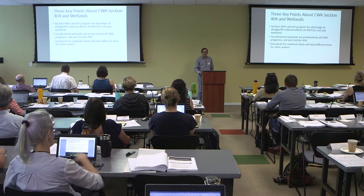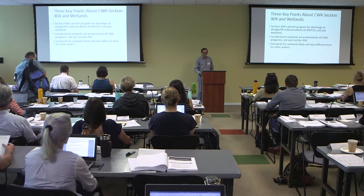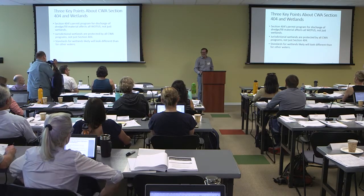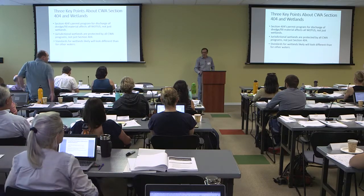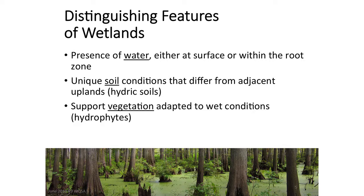So what's a wetland? In the regulatory program, we use a three-parameter definition for wetlands. The three things that are required are water, soils, and vegetation. There needs to be water at the surface or in the rooting zone for at least two weeks during the growing season for an area to be considered a wetland. In addition to that, there needs to be soil conditions that are reflective of inundation or saturation.